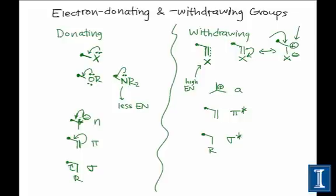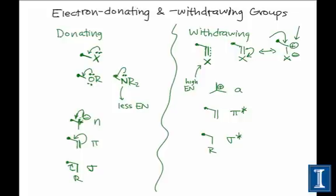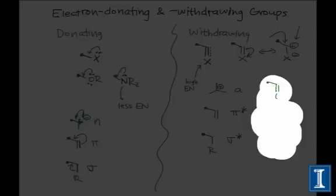To recognize electron withdrawing groups, again, look for double or triple bonds associated with electronegative heteroatoms, and these include things like the carbonyl group, the nitrile, and the granddaddy of them all, which is the nitro group. The nitro group benefits not only from having electronegative oxygen atoms associated with it, but also a positive charge on central nitrogen atom, which makes this an even stronger electron withdrawing group.